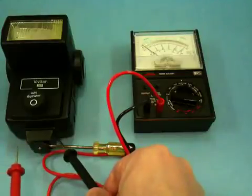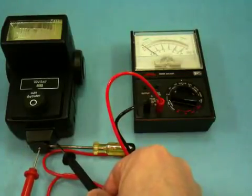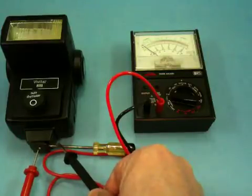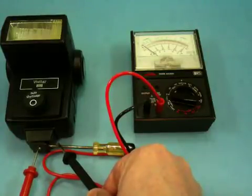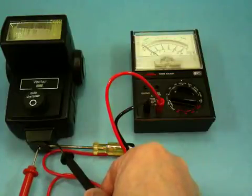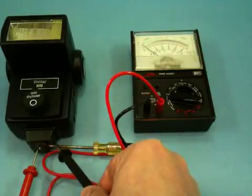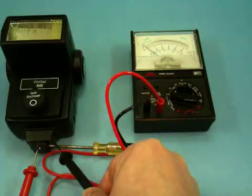You will touch the black probe to the screwdriver shaft and the red probe to the silver colored knob at the bottom of your flash unit. And you can see that the needle is moving just imperceptibly toward the right.